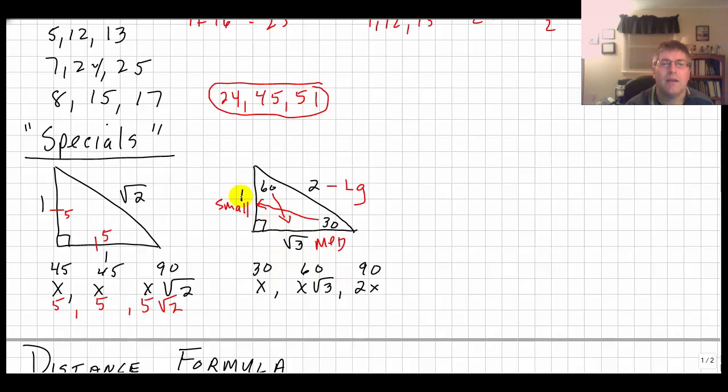And that particular family, to get to my point, the 30, 60, 90 is really the 1, square root of 3, 2. Or x, x radical 3, 2x.